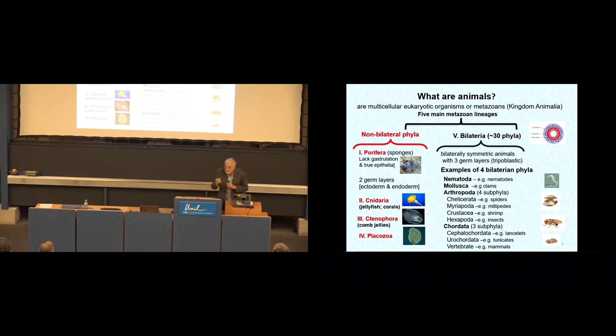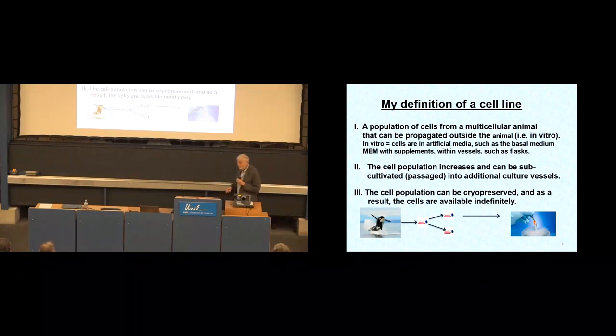So you've probably waited all day to find out what the heck are cell lines. So here's my definition: a population of cells from a multicellular organism that can be propagated in vitro. And really I'm asking them to have only two properties. One is that they proliferate in vitro and so I have to sub-cultivate them or passage them into new vessels. And then the second criteria is that I have to be able to cryopreserve them, and that includes recovering them from the liquid nitrogen dewar. So those are what cell lines are in my eyes.